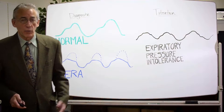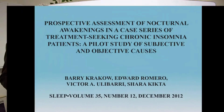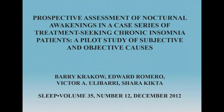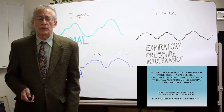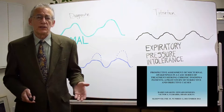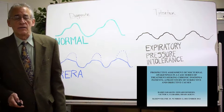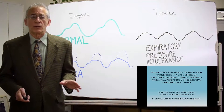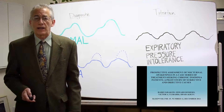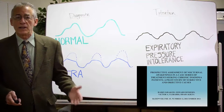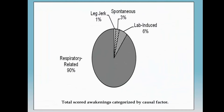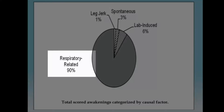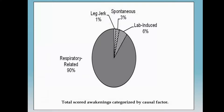Another study we did more recently looked at prospective evaluations of patients complaining of insomnia who were trying to figure out why they were waking up at night. With these 20 individuals, we asked them for their explanations, and virtually all of them gave non-breathing-related explanations — mostly psychological factors, perhaps other physical factors such as noise and temperature. But it turns out that when we put them in the lab for a diagnostic study, 90% of their awakenings were preceded by a respiratory-related event: an apnea, a hypopnea, or a flow limitation event.